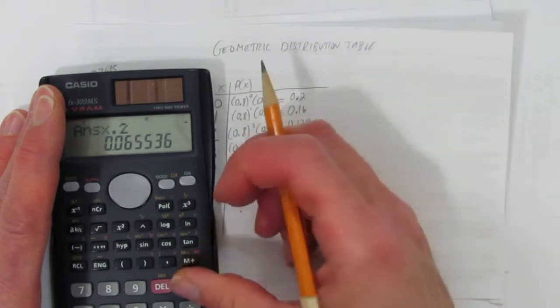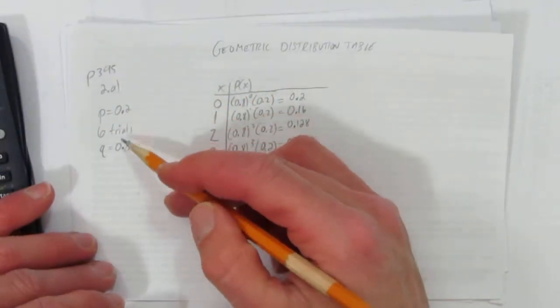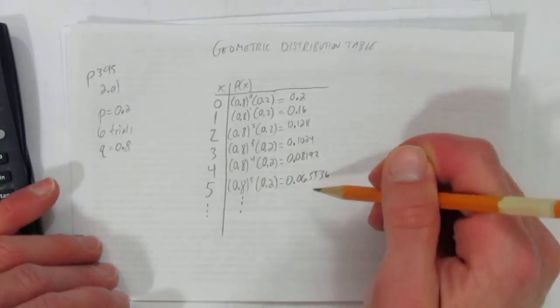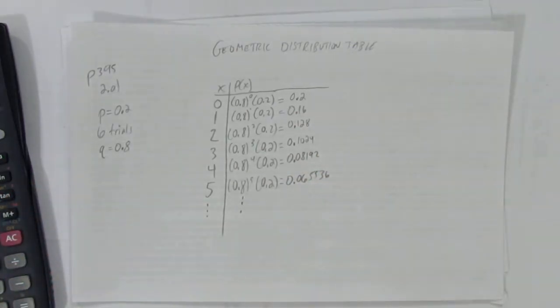what we've done here is wrote down the success and failure probabilities, and then calculated a geometric distribution table.